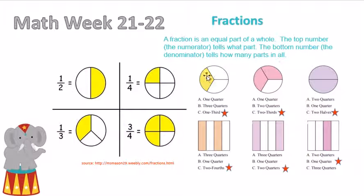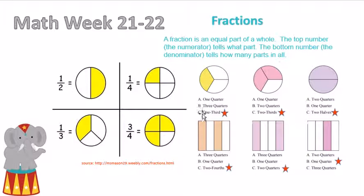We have one shaded in here out of three parts — one, two, three parts — and one shaded in, which makes it in name one-third.